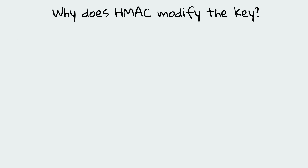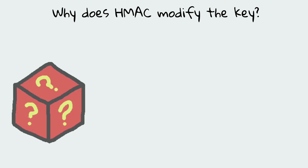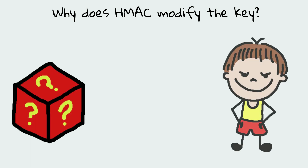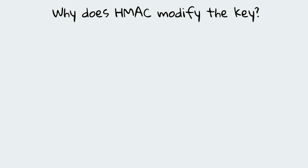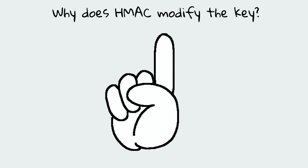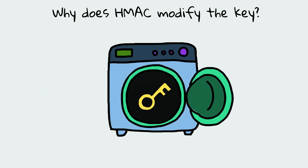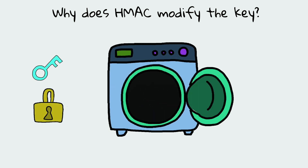Why exactly does HMAC internally modify the key? In cryptography, a key needs to be random so that attackers can't detect any patterns, because patterns make it easier for hackers to figure out the key. That's why the IPAD and OPAD values are critical components in the HMAC computation process, ensuring that the shared secret key is mixed and processed in a specific manner, enhancing the randomness of the key and strengthening the security of the message authentication process.